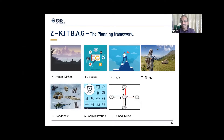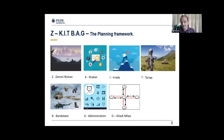So this is the Z-KITBAG framework: Zamini Nishan, Khabar, Irada, Tariqa, Bandobast, Administration, Gadi Milau. This planning framework can be used for many things, including business. We are going to use it to think about our investments and the biases — the negative influences you can be subject to at every stage. Building awareness of these biases is potentially going to help us stay on track.